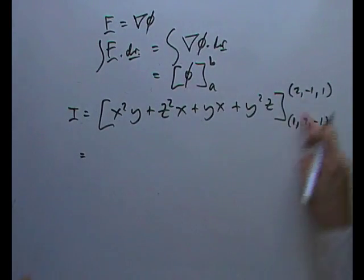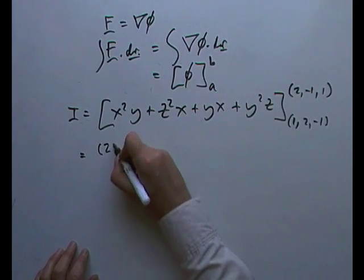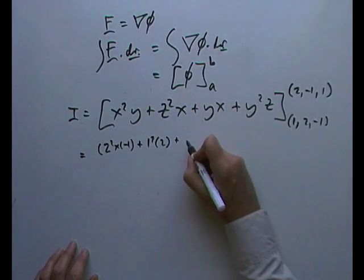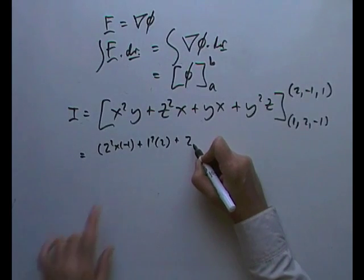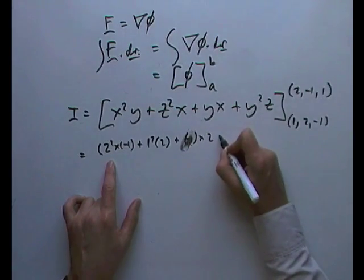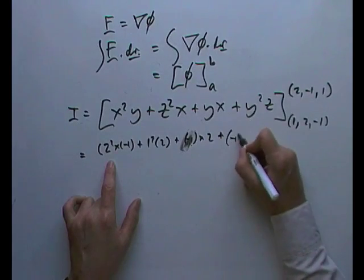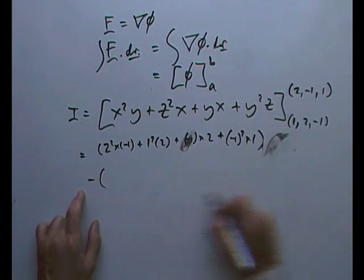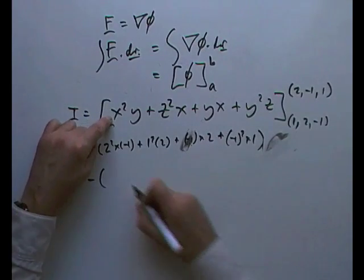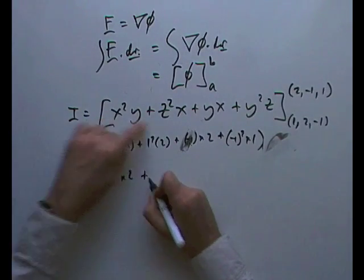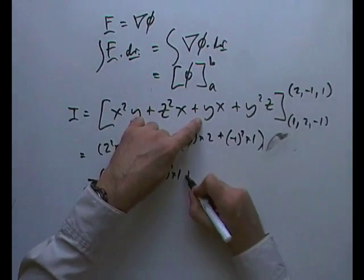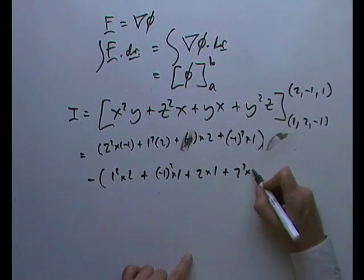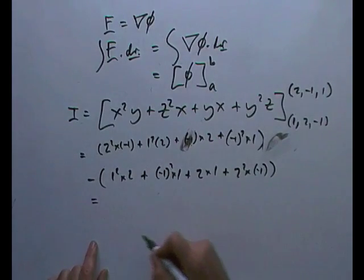So that you're going to have for the first one, so starting with this one at the top here, that's going to be, I've got 2 squared times negative 1 plus 1 squared times 2 plus 2 plus negative 1 squared times 2 plus negative 1 squared times 1 minus, I'll put that underneath, minus, same again for this one now, looking at this one, I've got 1 squared times 2 plus negative 1 squared times 1 plus 2 times 1 plus 2 squared times negative 1.